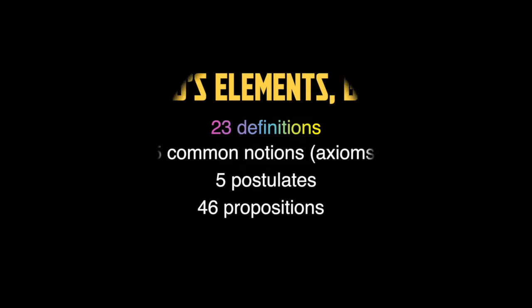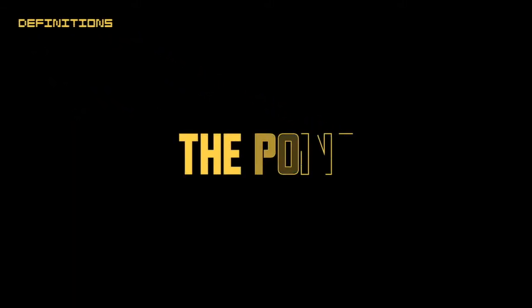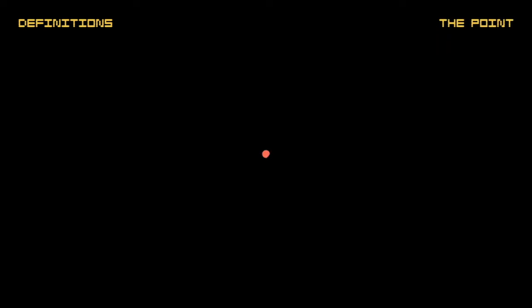In this video we will present 23 definitions. A point is that which has position but not dimensions. It is already invisible, but a point 100 times smaller than the first point is drawn here. If you make it infinitely smaller so that it has no size, that is the point. However, in this series we will represent it with a visible dot because it is difficult to convey the content if it is not visible.